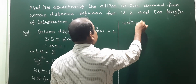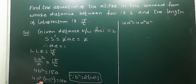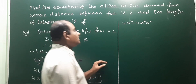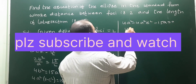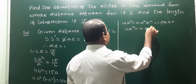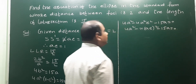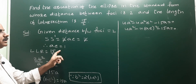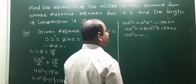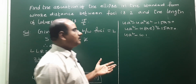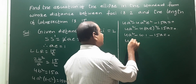Expanding: 4a² - 4a²e² = 15a. Since ae = 1, we have (ae)² = a²e² = 1. Substituting, this becomes 4a² - 4(ae)² - 15a = 0, which simplifies to 4a² - 4 - 15a = 0, giving us a quadratic equation in a.